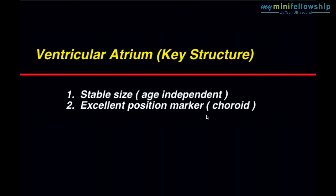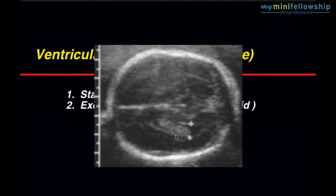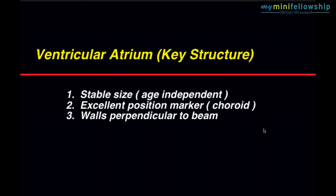It has an excellent position marker, the choroid plexus. On an axial scan where the choroid ends and the fluid in the ventricle begins, that marks the position of the glomus of the choroid plexus. The glomus marks the position of the ventricular atrium.